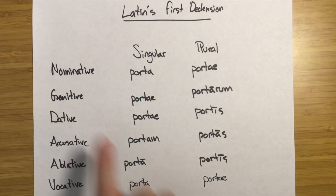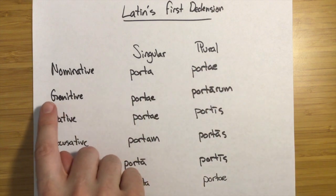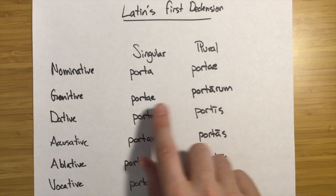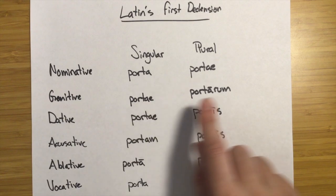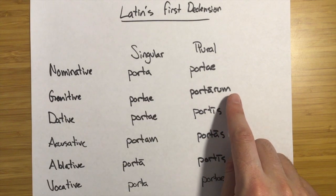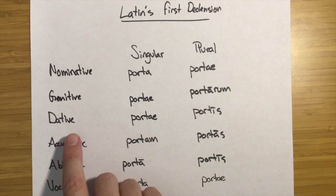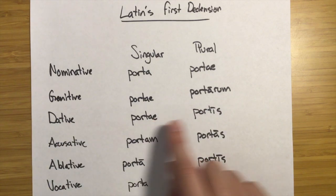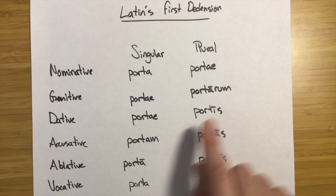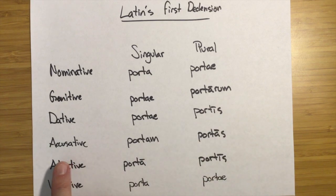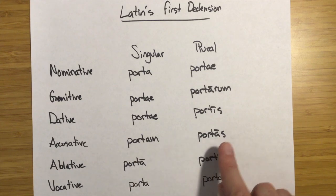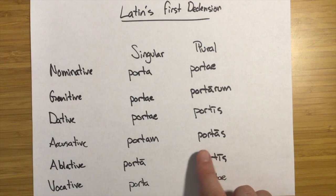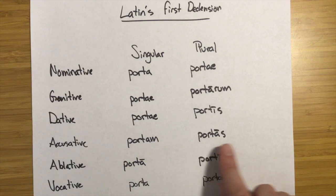Just to review: nominative is the subject. Genitive is possessive, so portae would be 'of the door' and portarum would be 'of the doors.' Dative is 'to' or 'for,' so this would be 'to the door' or 'to the doors.' Accusative is the direct object — so if you were to say 'I love the door,' it would be portam. If you were to say 'I love the doors,' it would be portas — amo portas.